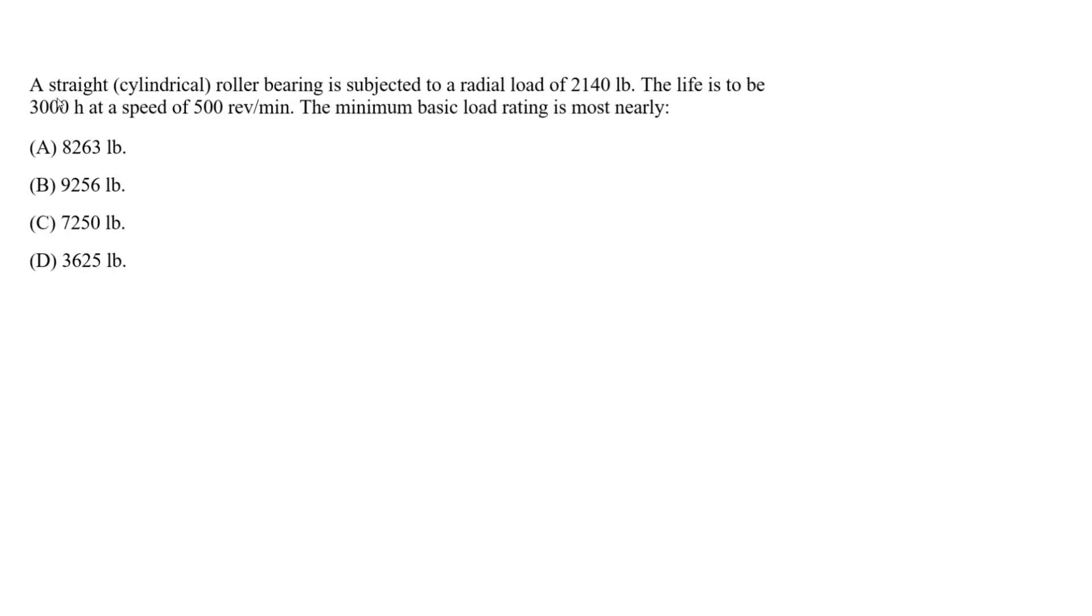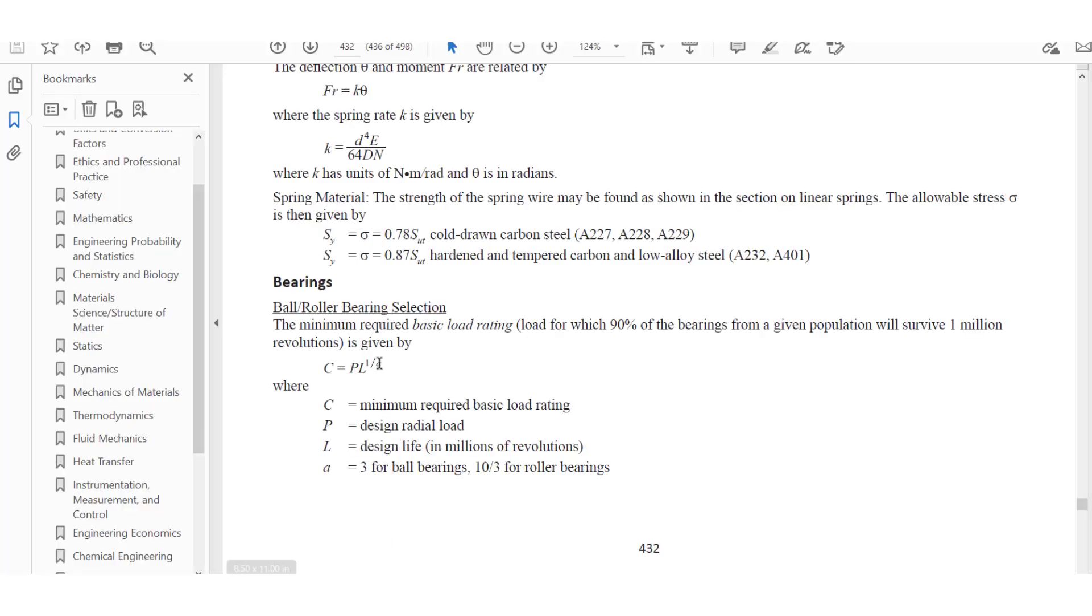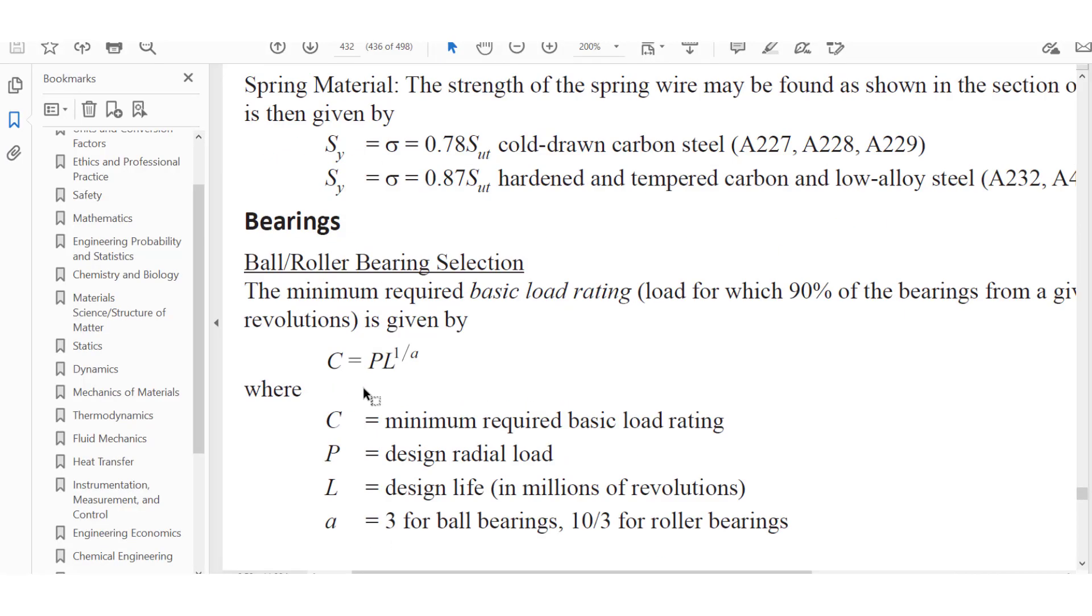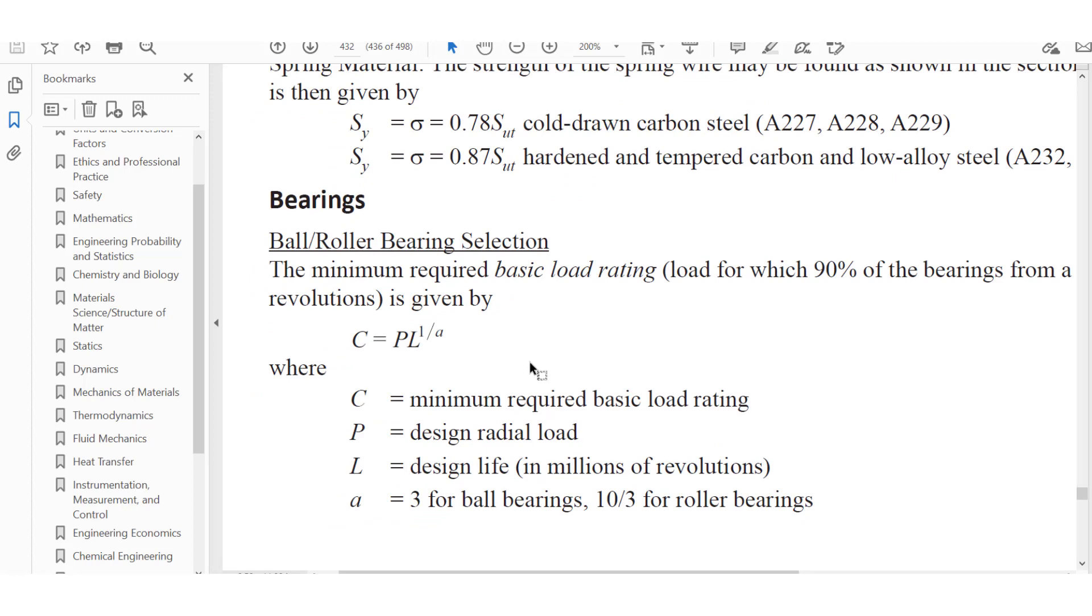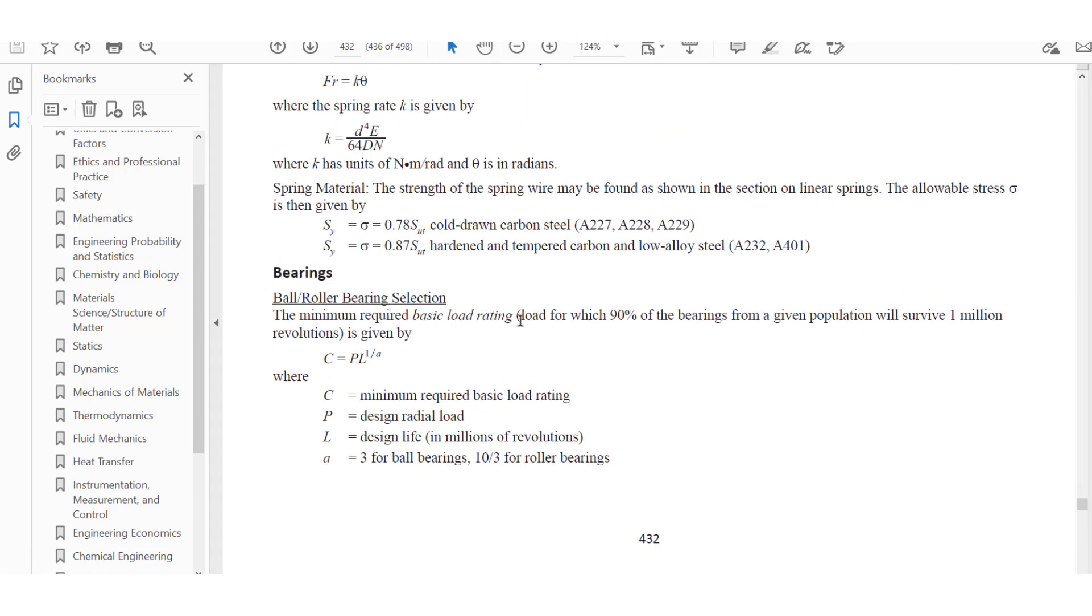So this is going to be the load rating where we have plastic deformation. It's very excessive and it's a design criteria that we need to have once we're picking out bearings, specifically using our manufacturing tables. So we can use an FE equation that is given in the handbook. It's a simple equation and this is specific to the basic load rating for a ball or roller bearing selection, and we know this is only for radial load.